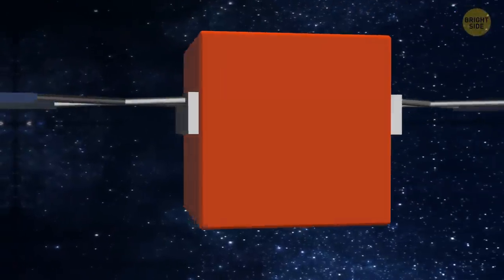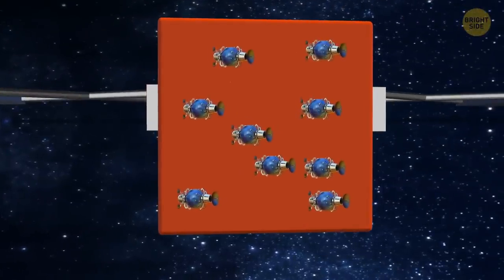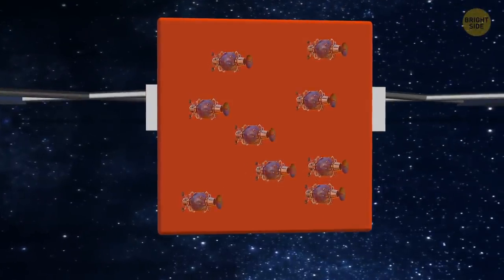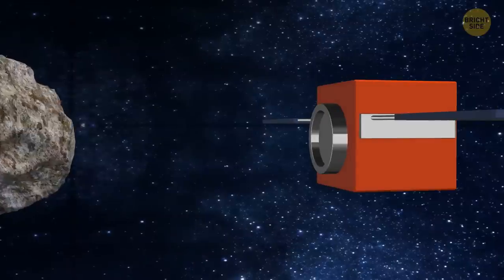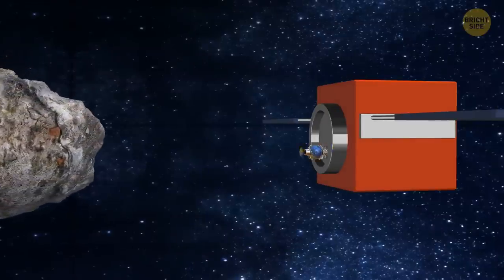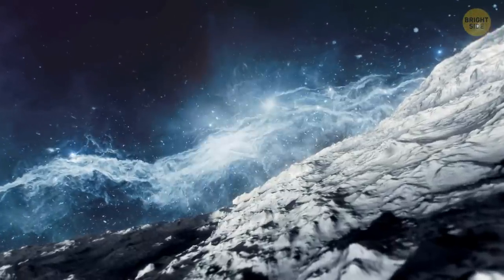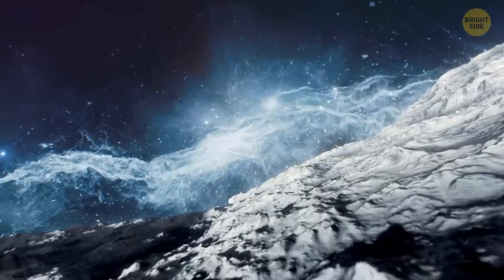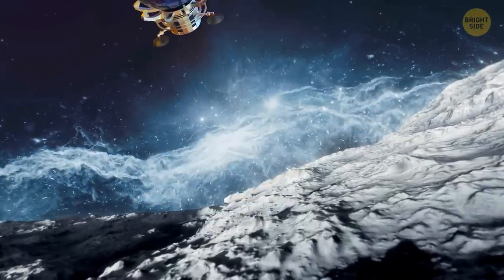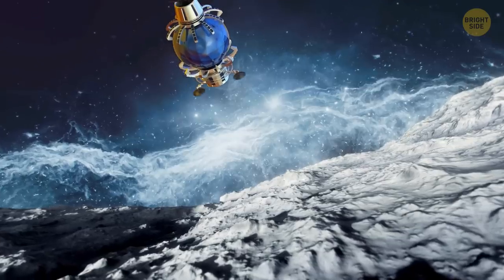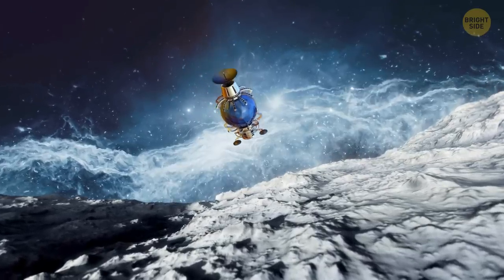HERA will also be carrying two CubeSats. These are miniature space probes, smaller than a shoebox. It'll launch these mini-satellites, and they will make an even closer approach to the asteroid. They will study this space rock for three to six months. At the end of the mission, one of them will attempt to land on the asteroid's surface to learn even more about its composition and internal structure.